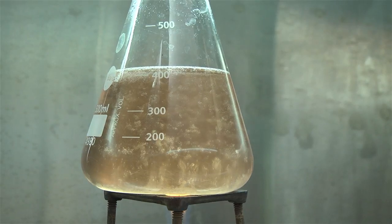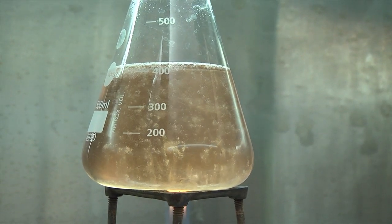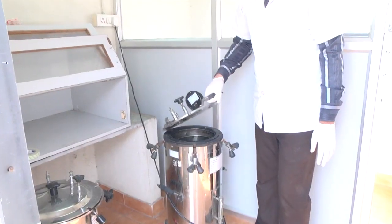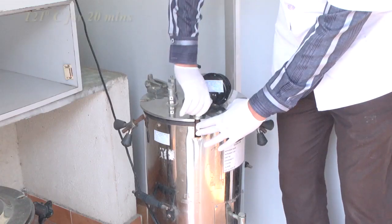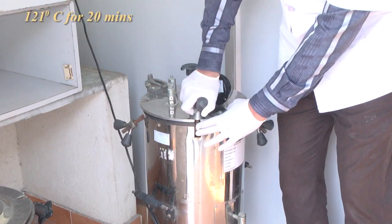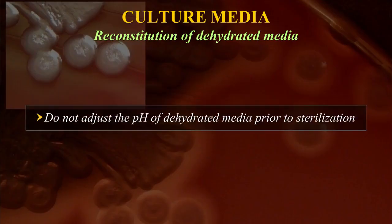Bring the medium to a boil without burning. Most culture media will require final sterilization in an autoclave at 121°C for 20 minutes, but it is important to follow the manufacturer's instructions as it may vary for different media. Do not adjust the pH of dehydrated media prior to sterilization. The pH is adjusted by the manufacturer so that after the medium is prepared, the pH matches the label specifications.